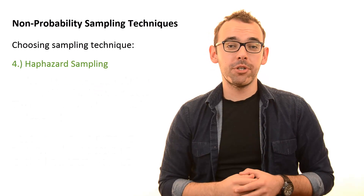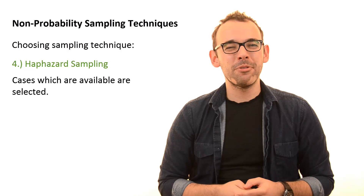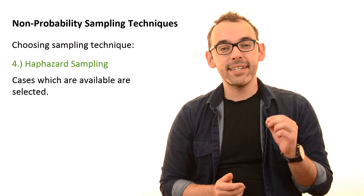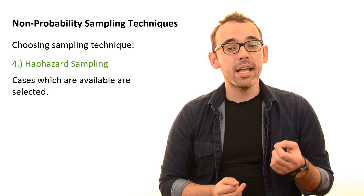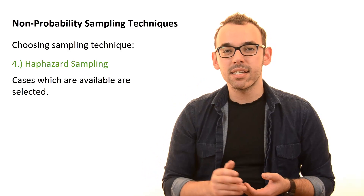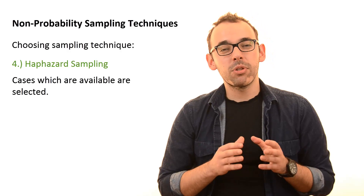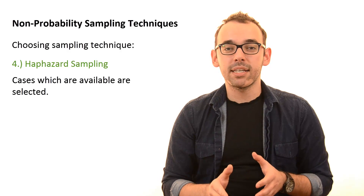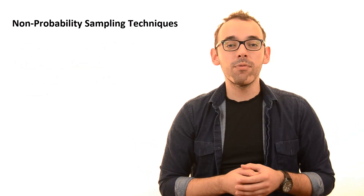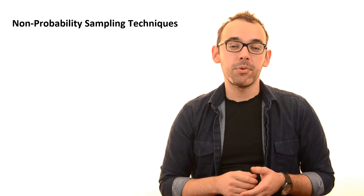The final option is haphazard sampling, and it is not recommended. The only justification for selecting your cases is that they are available and reachable for you. Stating in your research that you selected these 10 cases because you had their phone numbers is not really the best approach. Try to avoid haphazard sampling, as the only basis for selection is availability. We have now gone through all non-probability sampling techniques, and hopefully you were able to select the one that suits your research best.